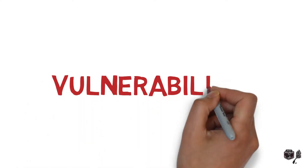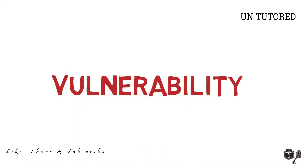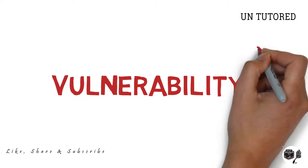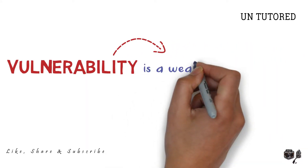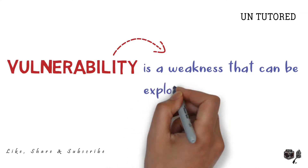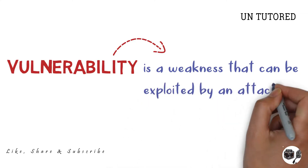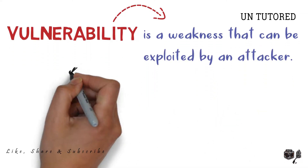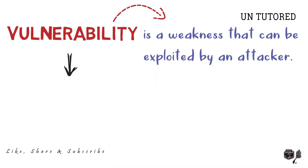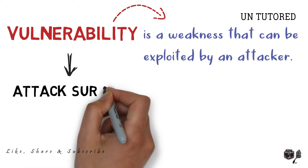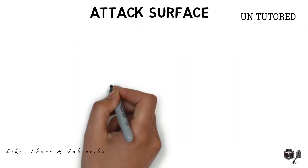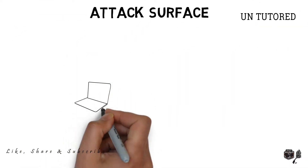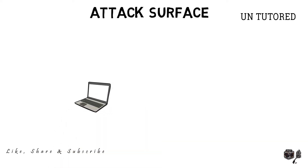Hello friends. In this video, I will try to explain about vulnerability. Vulnerability in simple terms is a weakness that can be exploited by an attacker. Vulnerability is also known as the attack surface, as it is the surface through which an attacker can enter your system or network.